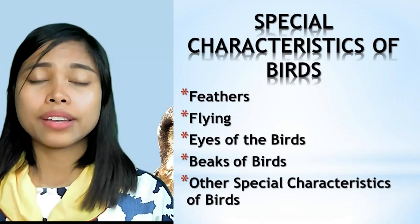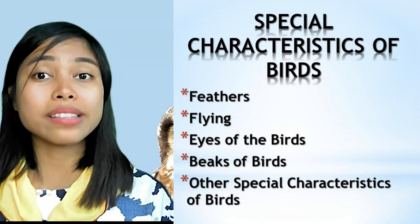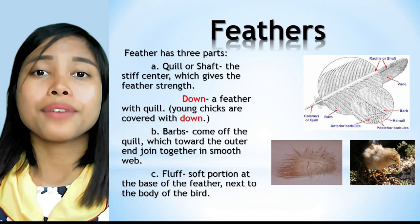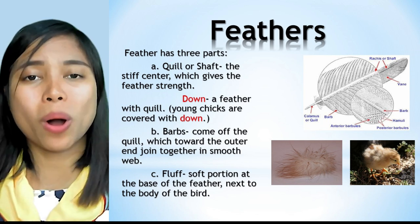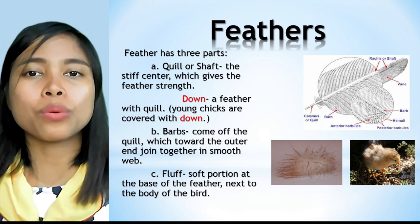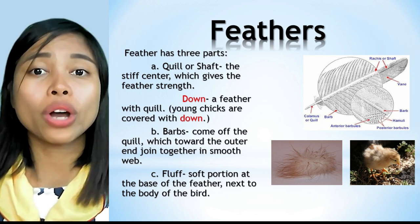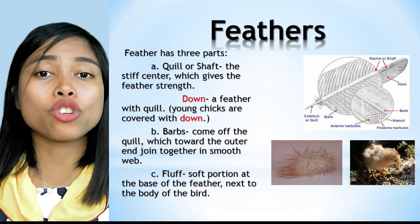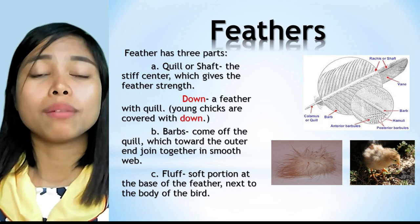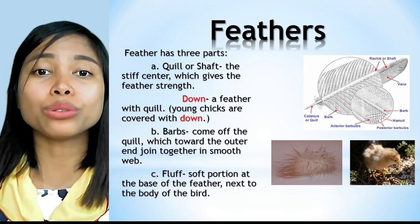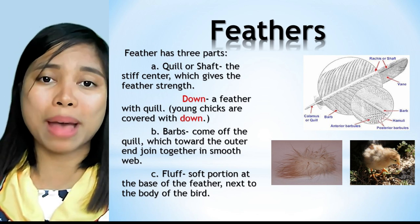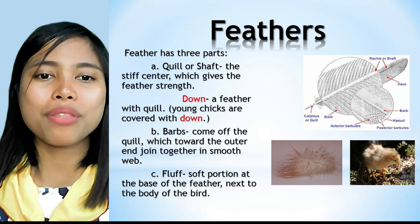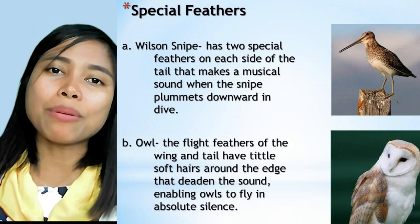Special characteristics of birds include feathers used for flying, the eyes, and the beaks. Feathers have three parts: the quill or shaft, which is the steep center giving the feather strength; the down, a feather with quill that young chicks are covered with; and barbs that come off the quill, which toward the outer end join together in a smooth web. The fluff is the soft portion at the base of the feather next to the bird's body.